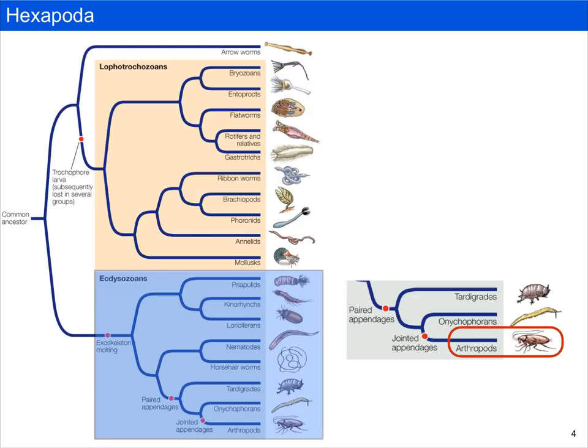If we zoom in on protostome phylogeny, we can see that hexapods are part of the arthropods, which are in ectisozoa. So all hexapods shed or molt an external skeleton.